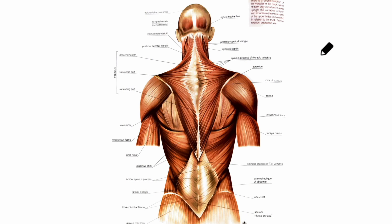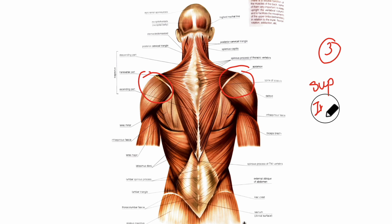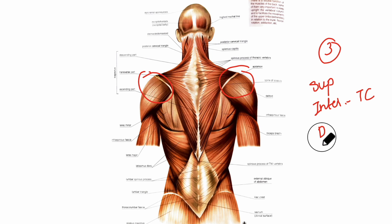To begin with, the muscles of the back can be divided into three groups. First is the superficial group of muscles that are associated with the movements of the shoulder. Then comes the intermediate group of back muscles that are associated with the movements of the thoracic cage. And then we have the deep group of back muscles that are associated with the movements of the vertebral column.